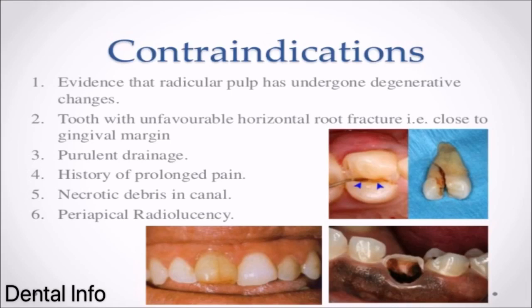Contraindications for Apexogenesis: 1. Evidence that radicular pulp has undergone degenerative changes. 2. Tooth with unfavorable horizontal root fracture, i.e., close to gingival margin. 3. Purulent drainage. 4. History of prolonged pain. 5. Necrotic debris in canal. 6. Periapical radiolucency.